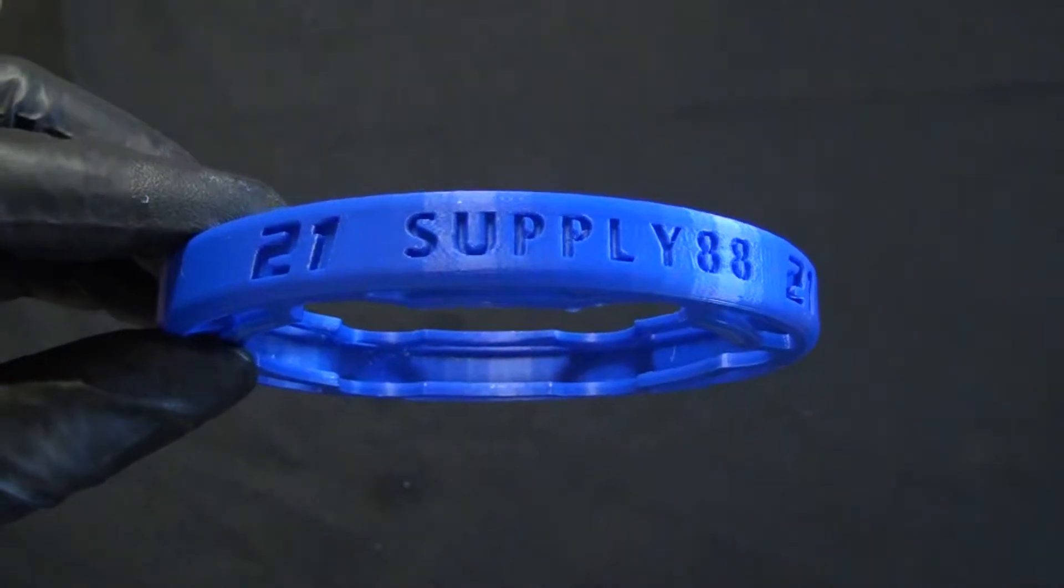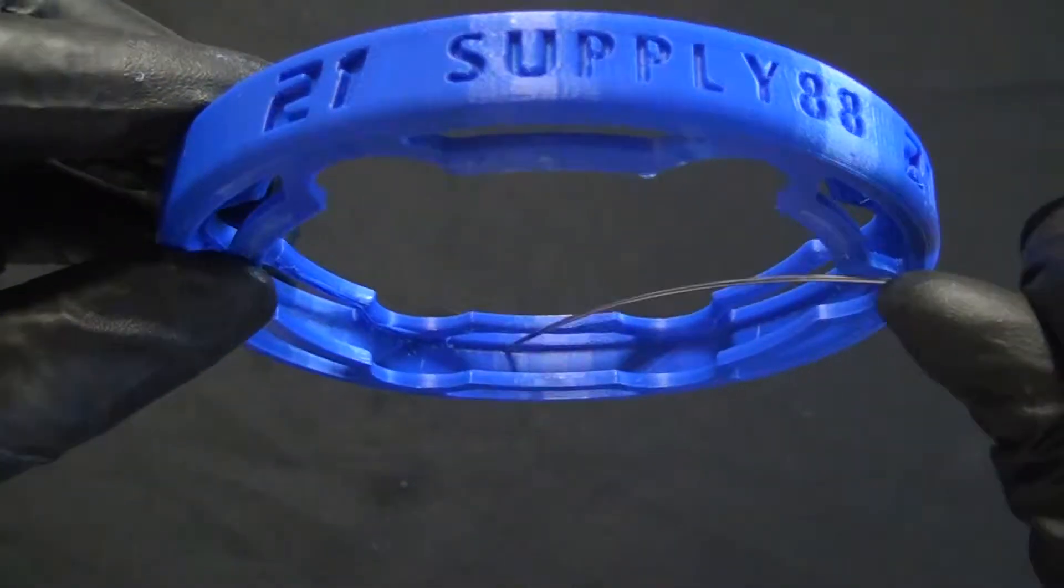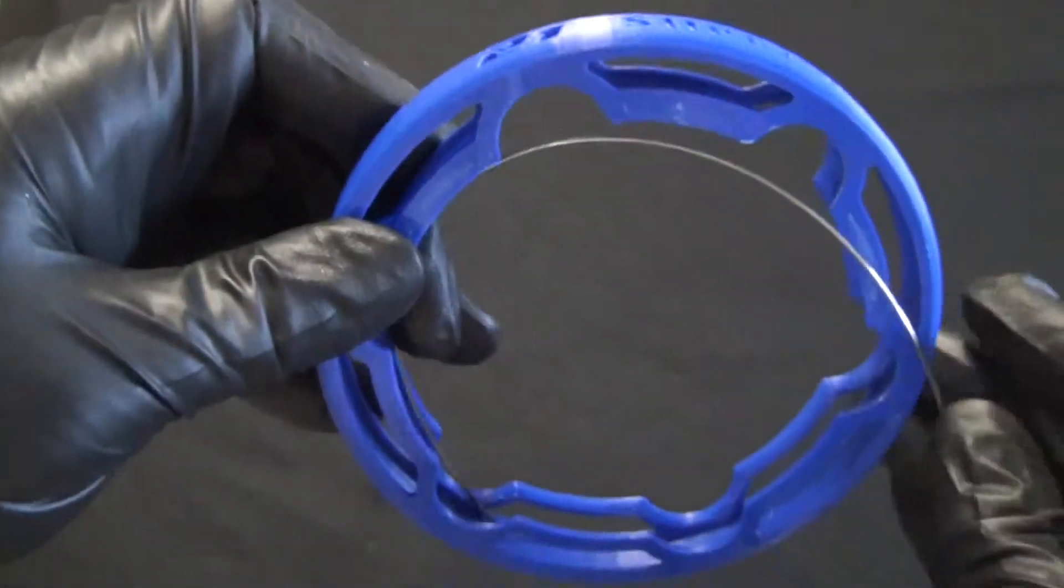Starting with the other end of the wire, begin feeding the wire into the tire and turn the tire like a wheel as you guide the wire into place.